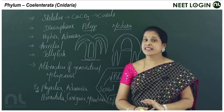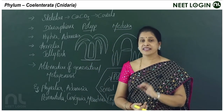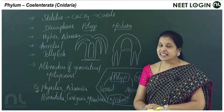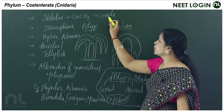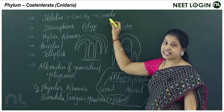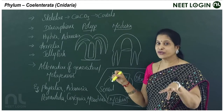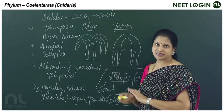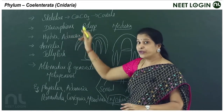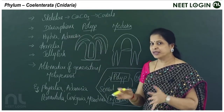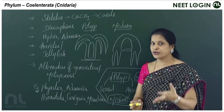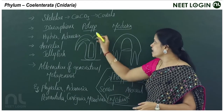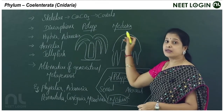In some cnidarians, the skeleton is made of calcium carbonate — a calcareous skeleton. Corals are an example; their skeletons are used as semi-precious stones in ornaments. A very unique feature of phylum Cnidaria is dimorphism — they exist in two forms: the polyp stage and the medusa stage.